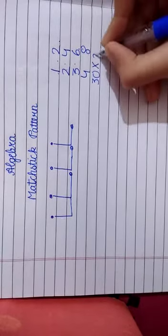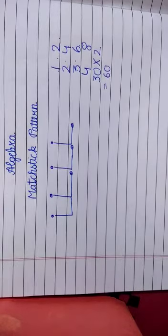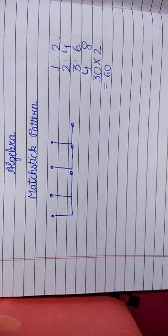If we multiply 30 with two, we will get 60. So, 60 matchsticks would be required to make 30 L's.